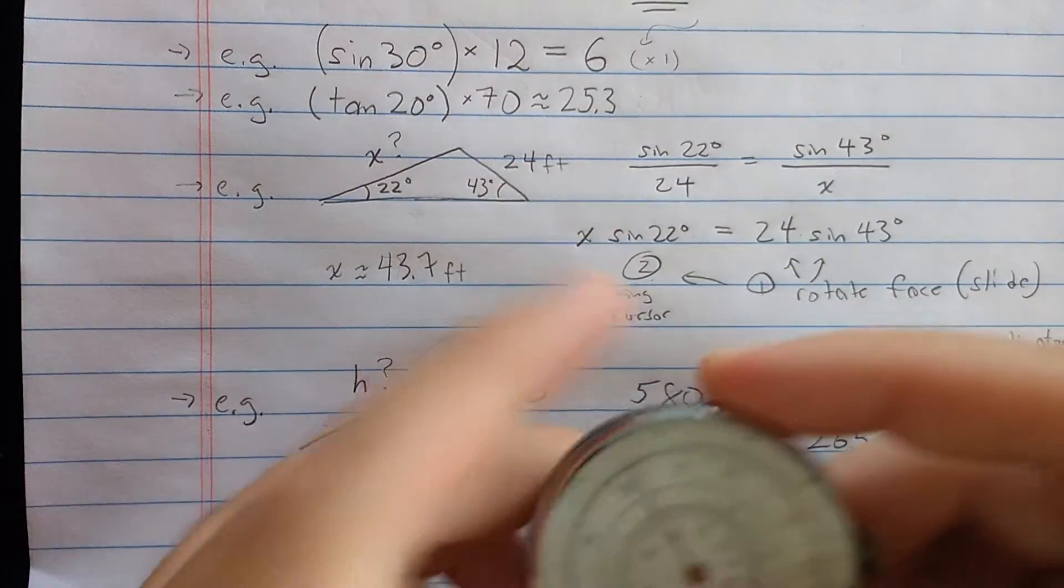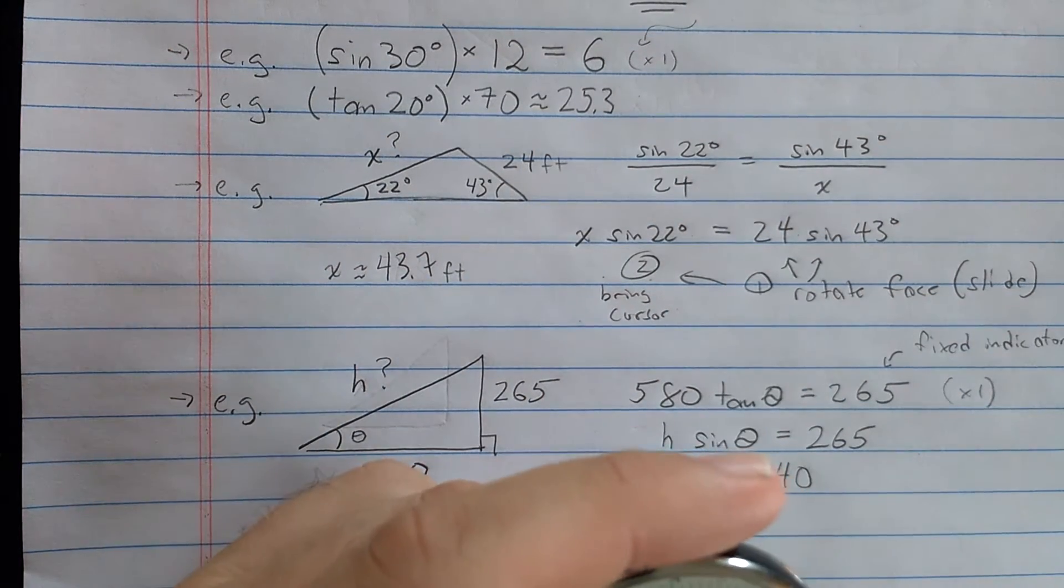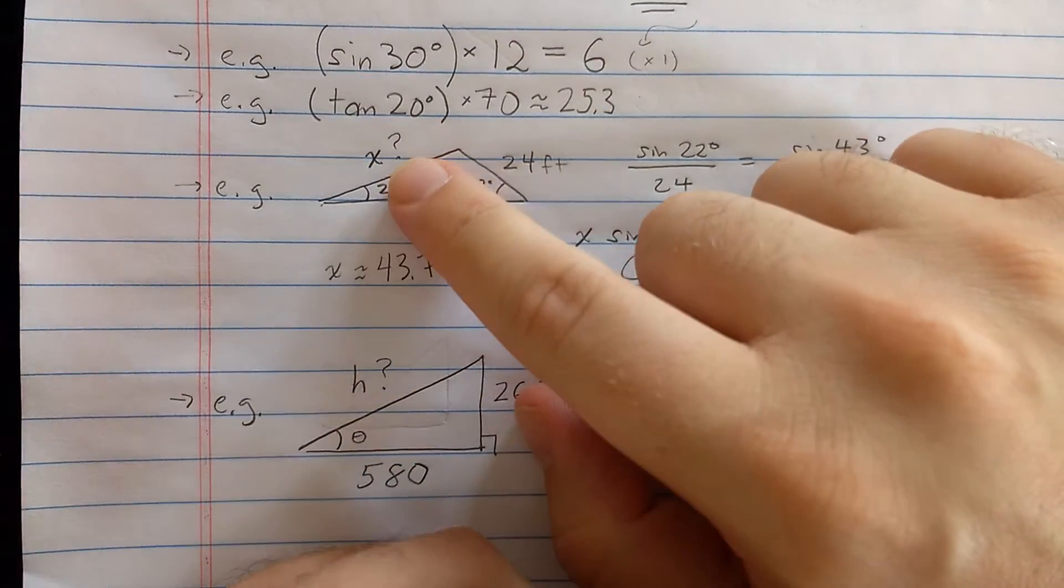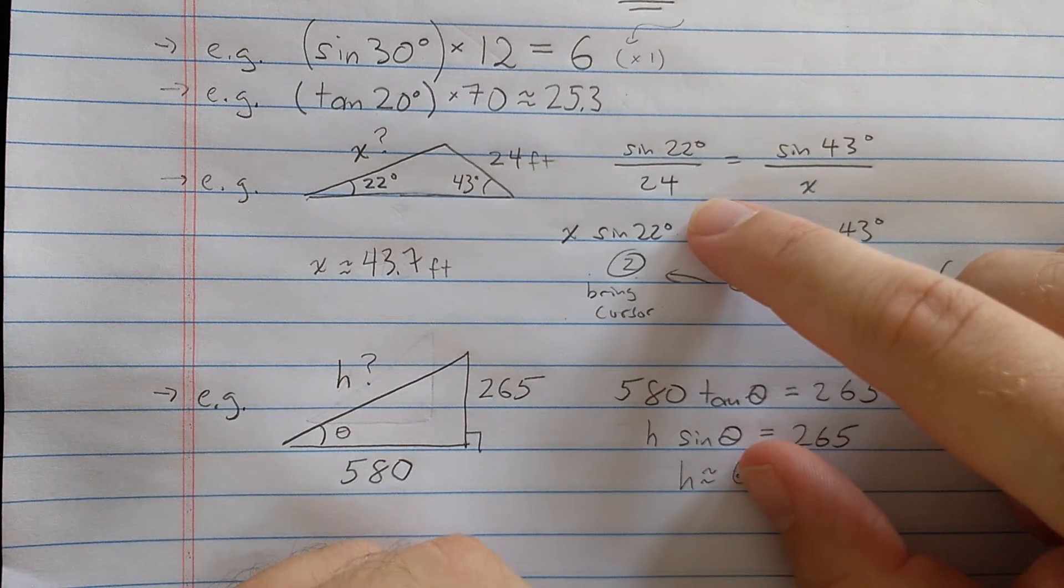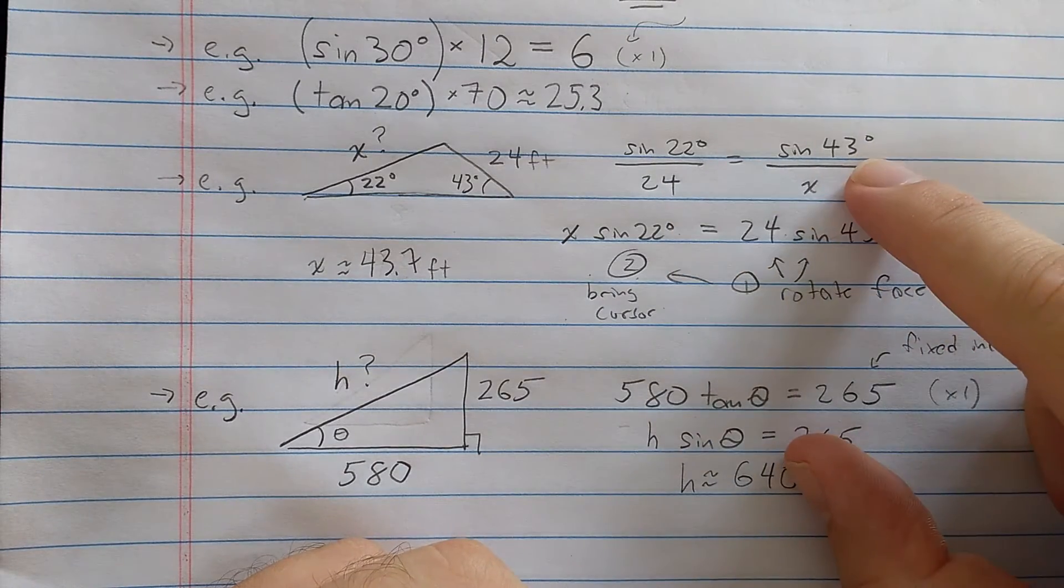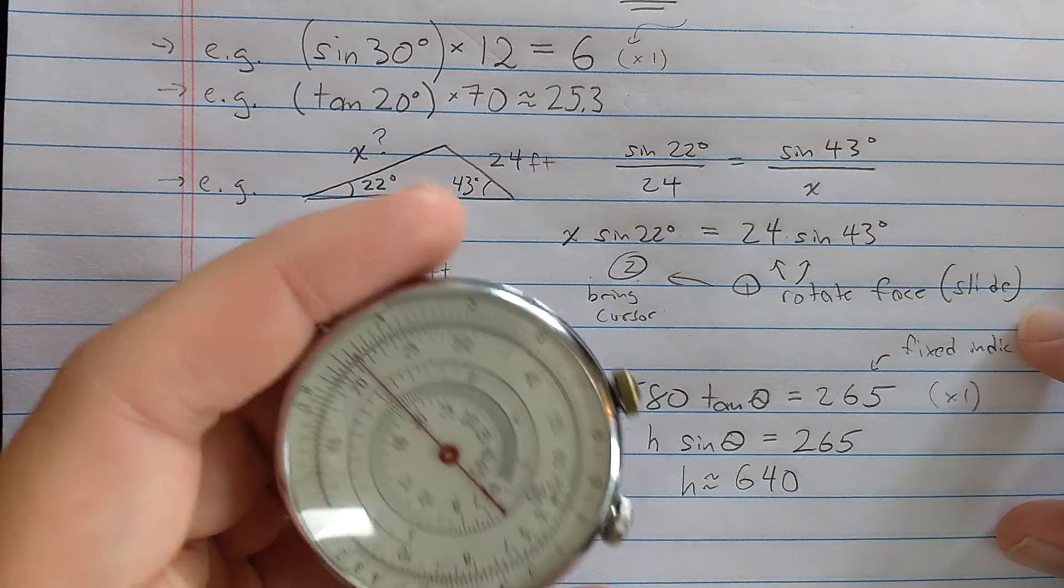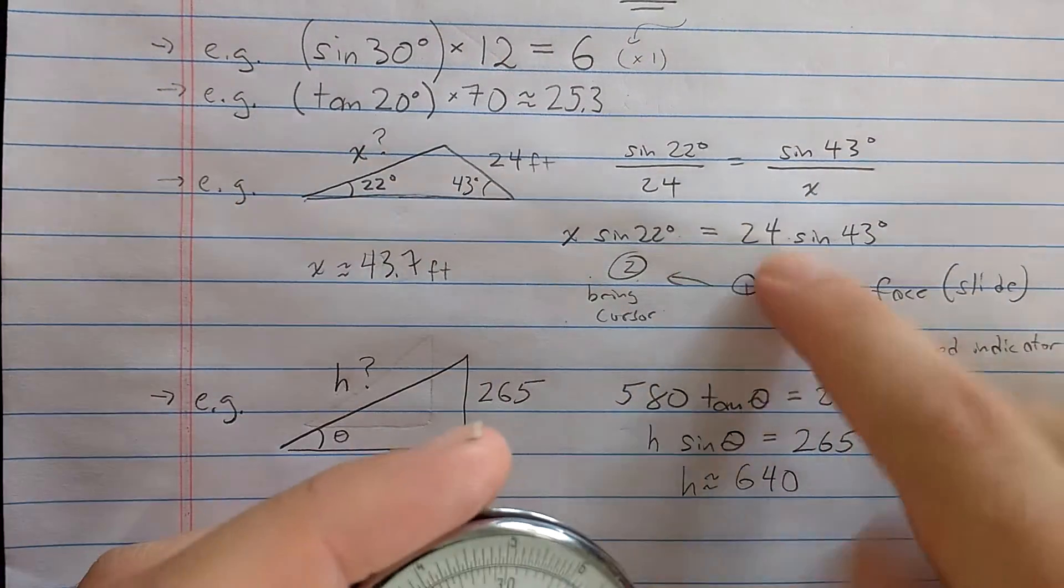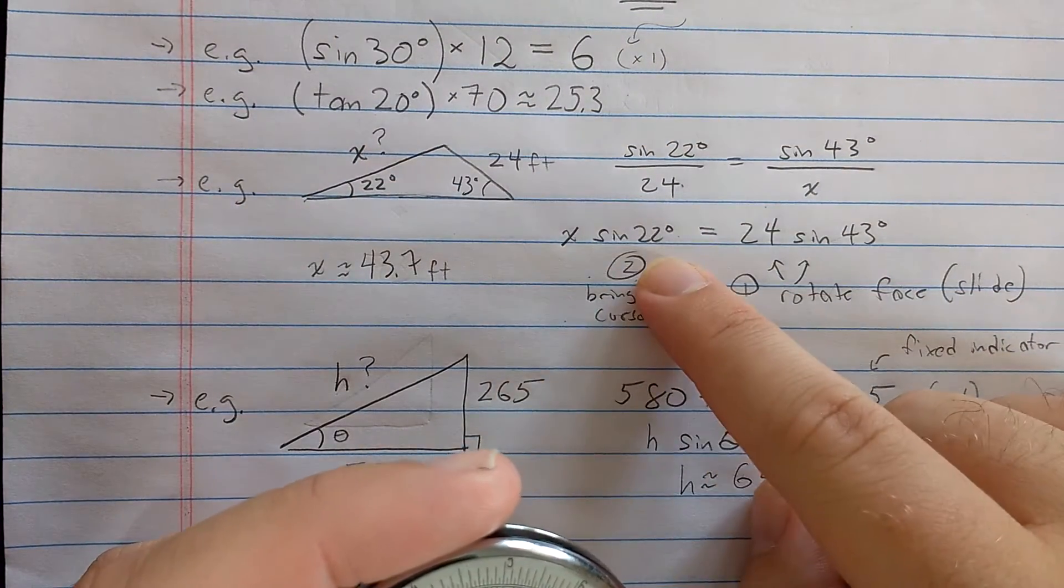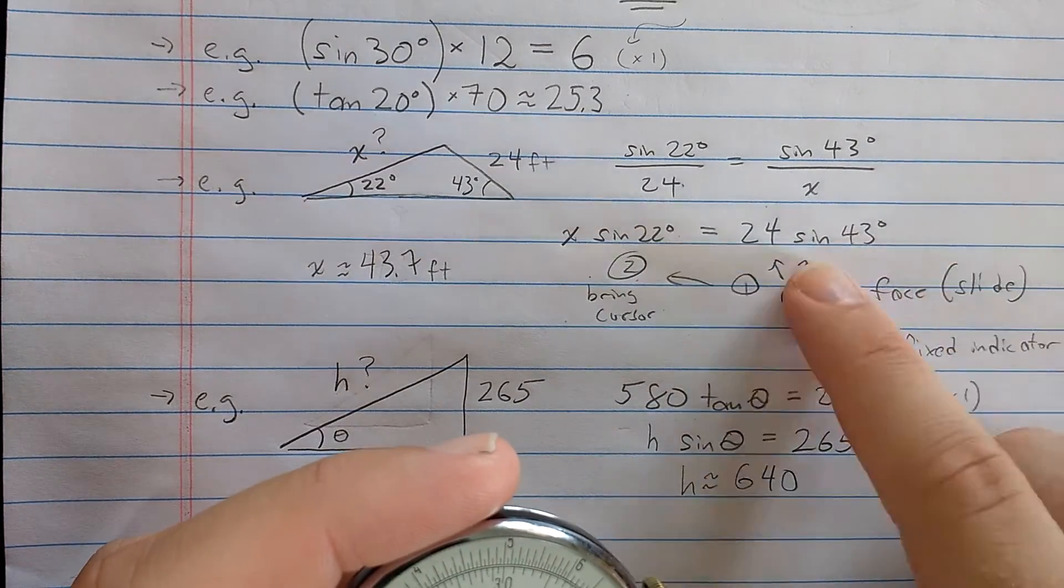Let's do this law of sines problem. Normally on a slide rule, if we wanted to do this, I want to find this side. I would set up this proportion: sine 22 degrees over 24 is sine of 43 degrees over the quantity I'm looking for. Because I'm dealing with the reciprocal scale, I'm going to cross multiply here and get x times sine 22 is 24 times sine 43. I'll deal with this side first.